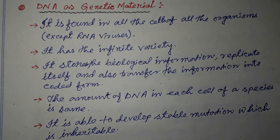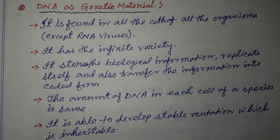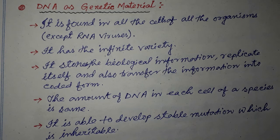So DNA is called the genetic material. We have started the second chapter of genetics and evolution with the characteristics to be a genetic material. DNA is the genetic material — it is a macromolecule with infinite variety, shows great specificity of function, the amount of DNA per cell within a species is the same, and it stores and transfers biological information.